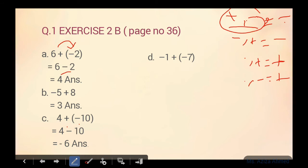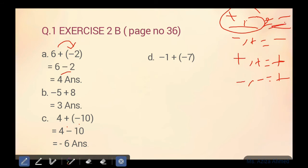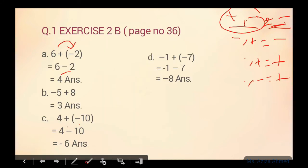Part D: negative one plus negative seven. Sabse pehle hum open karenge bracket ko. Bracket ko open karne ka rule hai: sign ko sign ke saath multiply kar do. Toh plus minus, minus ko jab multiply karenge, answer aayega plus minus minus. Ab do number aaye — dono negative hain. Dono same sign hain: minus minus plus. Seven mein one ko plus karein toh eight aajayega. Dono number negative thay, toh answer bhi minus mein aaya — negative eight.